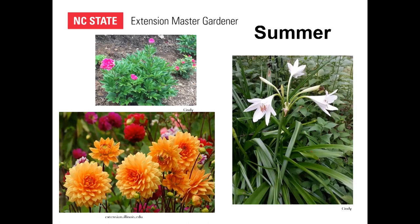These are crinums — everybody calls them pass-along plants because they're old-fashioned. They usually smell wonderful and come in all different colors now from white to pink and stripes. They have an odd bulb — it's more slender with a taller neck that sticks out of the ground, unlike an amaryllis which is pretty round. They multiply and you can just dig them out and put them around your yard, give them to your neighbors, or share with people who want to start growing different things.